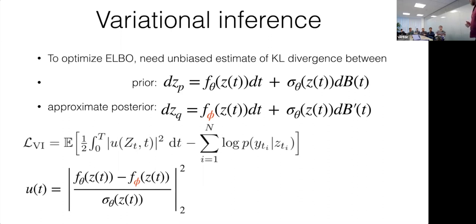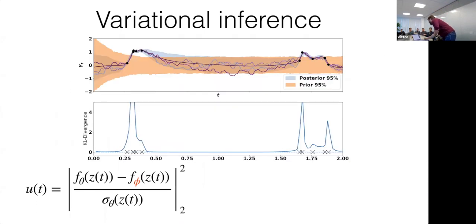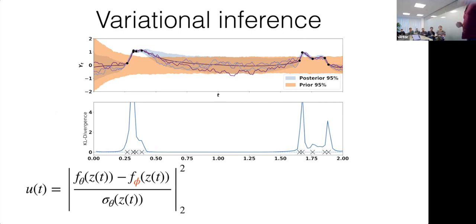This integral might seem annoying, but I'm already integrating the state forward in time, so adding this little KL accumulator is just one extra real-valued state added to the SDE integrator. Here's an example from a student: orange shows prior marginals and blue shows posterior marginals, along with the instantaneous KL at each point. Nicely, the instantaneous KL is only large right around the data.